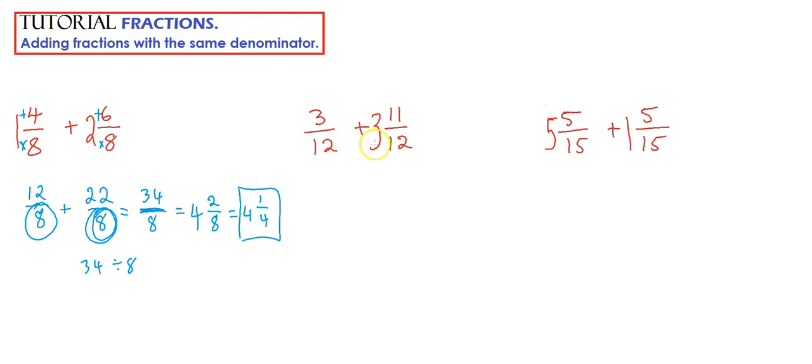If we move over to the next one, we have, we've got 3 twelfths. We don't need to rename that, so that's good. And this one here, 12 times 3 is 36. So 36 plus 11 gives us 47.